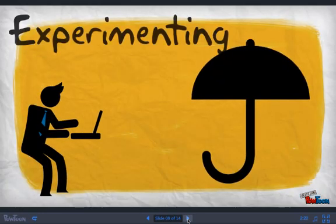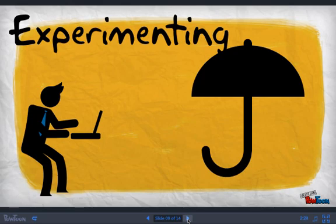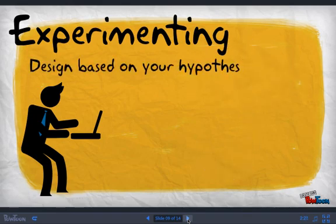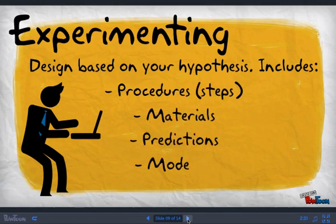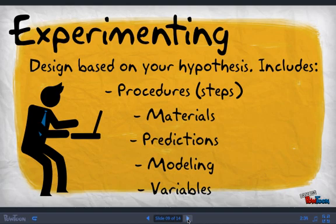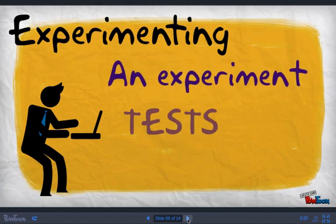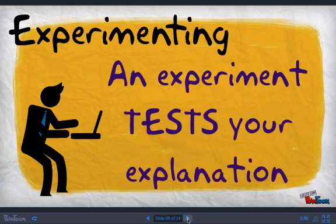Experimenting. This practice is what I like to refer to as an umbrella term as in a lot of other smaller practices or classic scientific method steps fall under it. The experiment in a scientific method is built from the foundation of your hypothesis. All procedures or steps, materials, predictions, scientific models, and variables are designed to test your initial explanation for the question you are trying to answer.